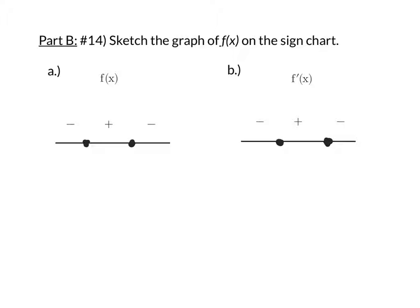Well, in part A, that sign chart is for f of x. Where each of the dots are, that's when the function is equal to 0. So those will be x-intercepts.